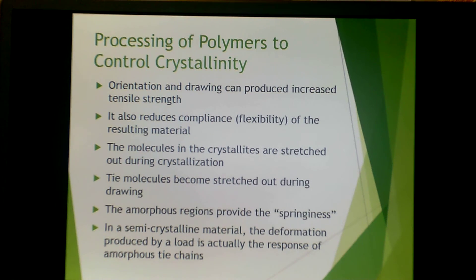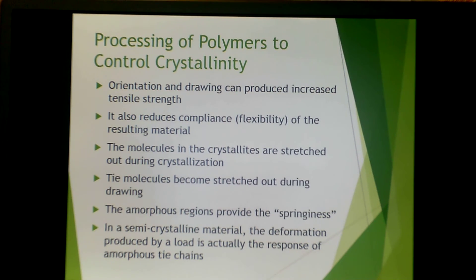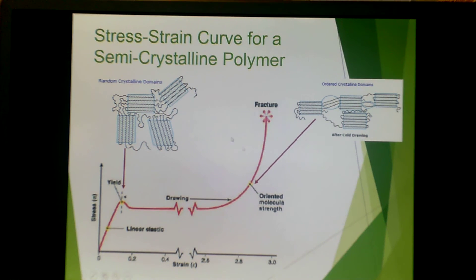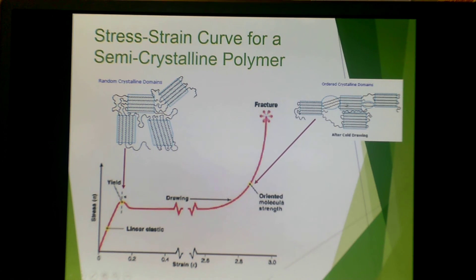Orientation and drawing can produce increased tensile strength, but can also reduce flexibility or compliance. The molecules in the crystallites are stretched out during crystallization, and the tie molecules mentioned earlier also become stretched out. These tie molecules in the amorphous regions have a springiness that is important — if a deformation is produced by a load, it is actually the response of these amorphous tie chains between the lamella. In a semi-crystalline polymer that has random crystalline domains, as you continue to draw on the stress-strain curve, you get an oriented morphology where the tie chains are stretched out, approaching the point right before fracture at ultimate strength.